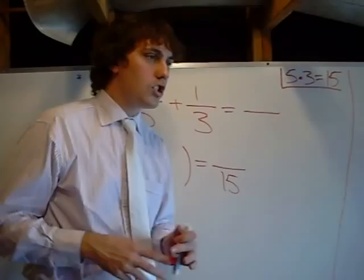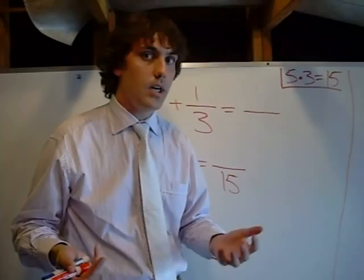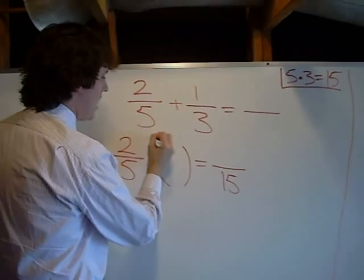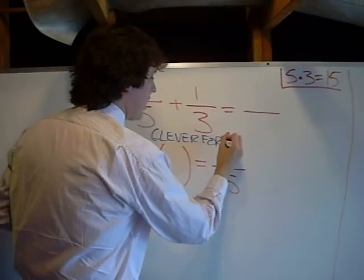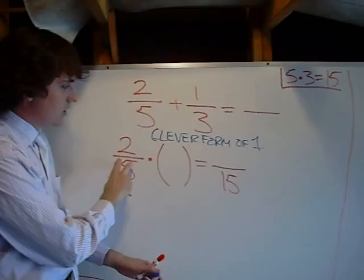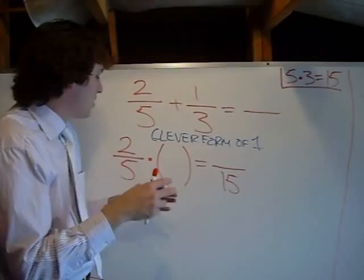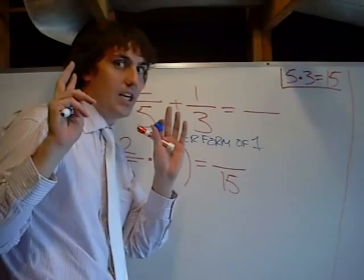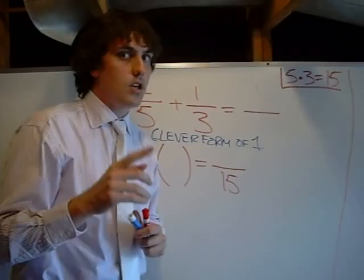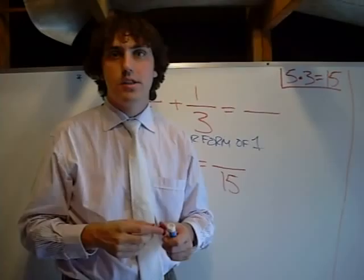A billion katrillion kajillion times 1 is a billion katrillion kajillion. Cool? So if we do 2 fifths times 1, 2 fifths times 1 is what? 2 fifths. Now what we have to do here is we have to come up with what's called a clever form of 1. A clever form of 1 allows us to transform this fraction into a different fraction with a denominator of 15. And so we're not really changing what this is because we're multiplying by 1, but it's what is known as a clever form of 1. We also know from other examples that any number divided by itself is what? 1.